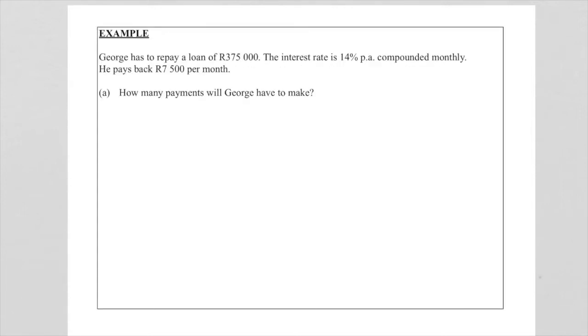In this problem Gregory has to repay a loan of $375,000. The interest rate is 14% per annum compounded monthly and he pays back 7500 rand per month. So first of all we need to calculate how many payments George has to make.